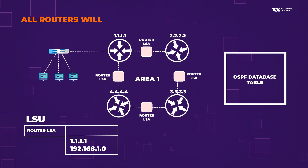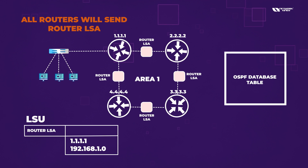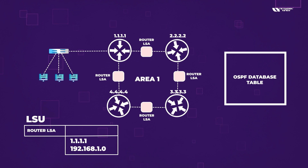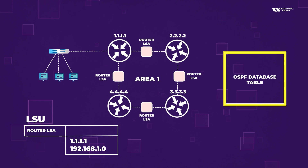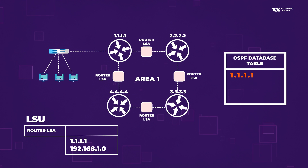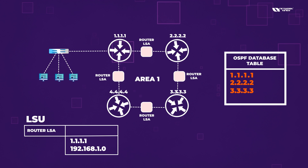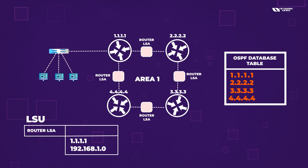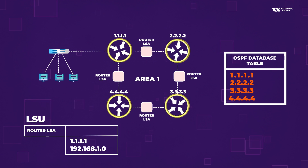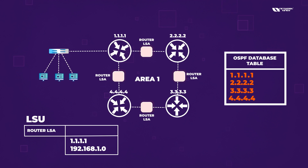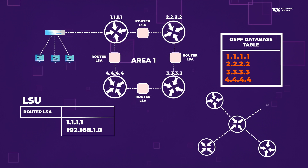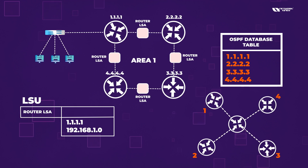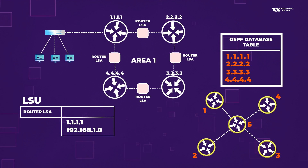All routers will send Router LSA, but this LSA will not be sent outside the area — they maintain their router IDs inside the area only. Inside the Router LSA we add 1.1.1.1, 2.2.2.2, 3.3.3.3, 4.4.4.4 — all router IPs — all information inside the database table. If you have four routers, four entries will be there, four Router LSAs. If one router is connected with four others, in the router database table you will have five Router LSAs — all five routers including itself.